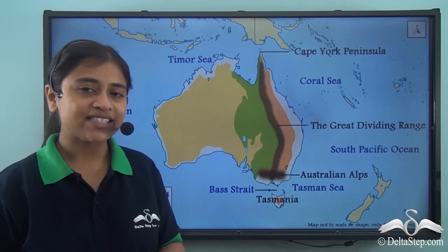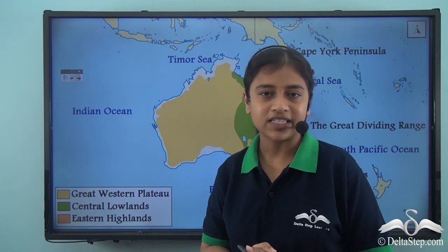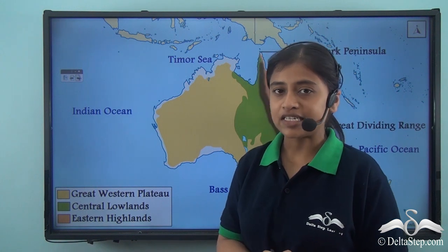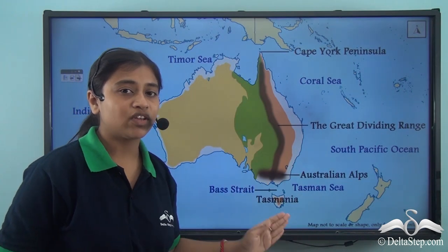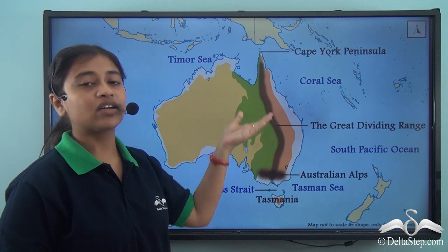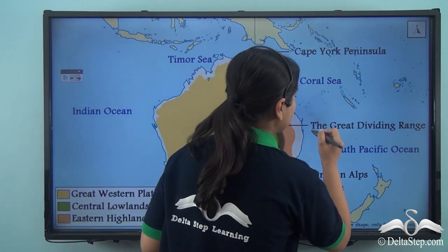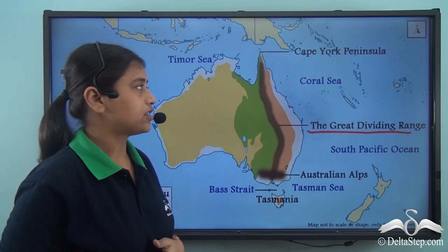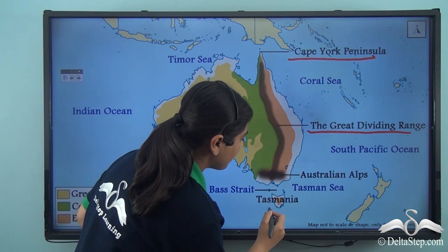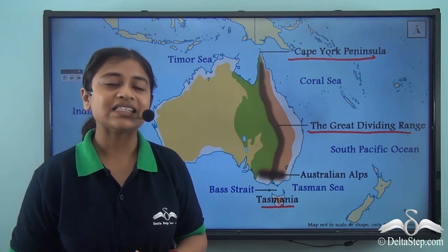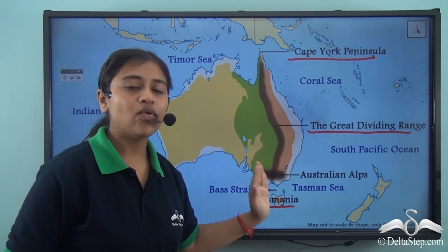In our previous lesson, we learnt about the Great Western Plateau and the Central Lowlands of the continent. Another important geographical feature is the Eastern Highlands. The Eastern Highlands stand along the eastern coast of the continent like an arc and are also known as the Great Dividing Range. It stretches from Cape York Peninsula in the north to Tasmania in the south, lying right next to the central lowlands of the continent.